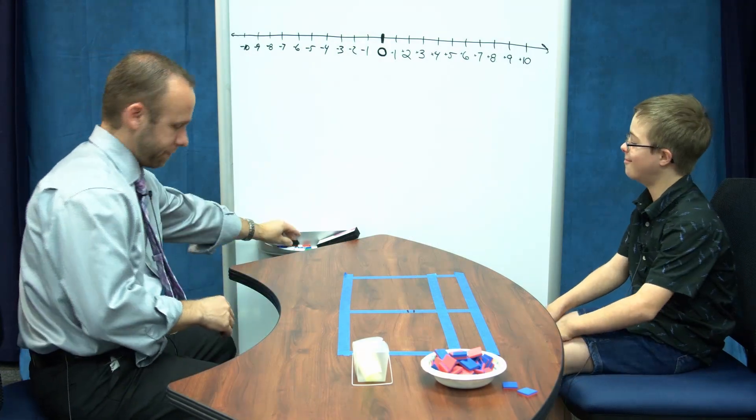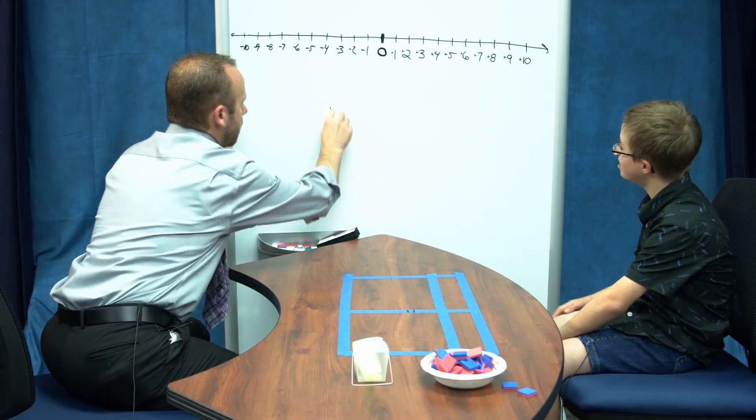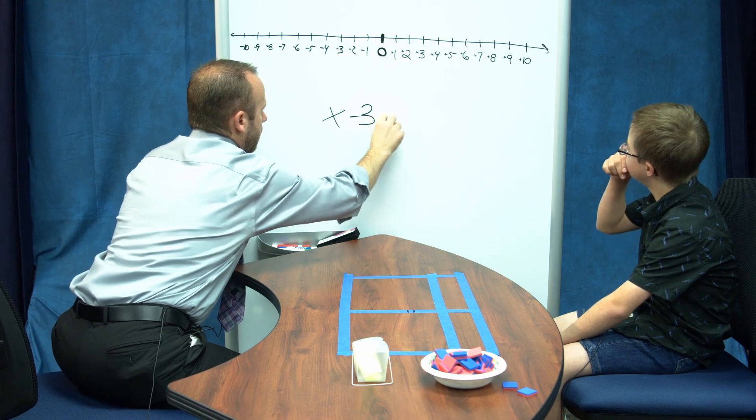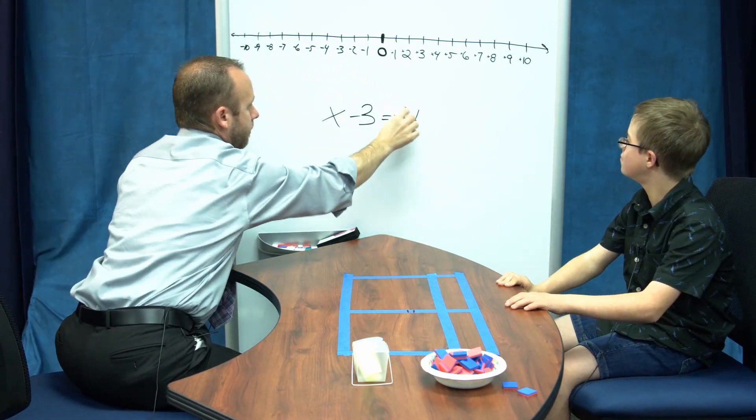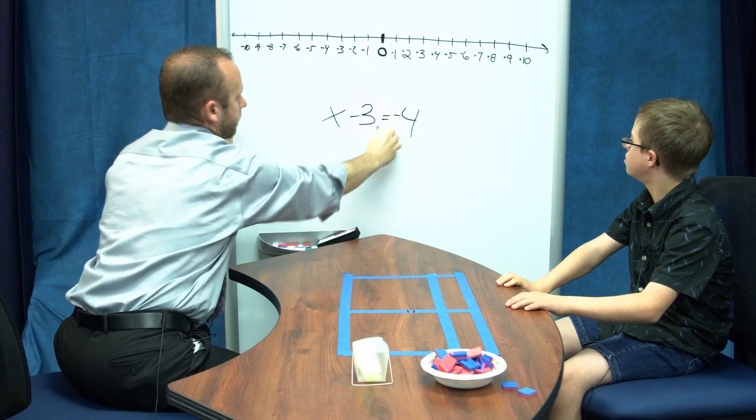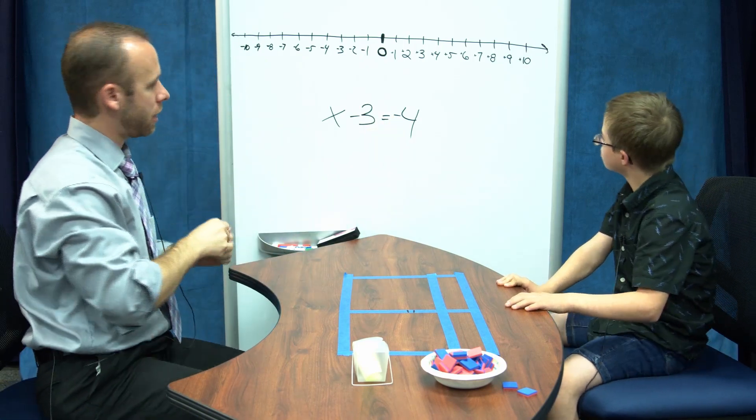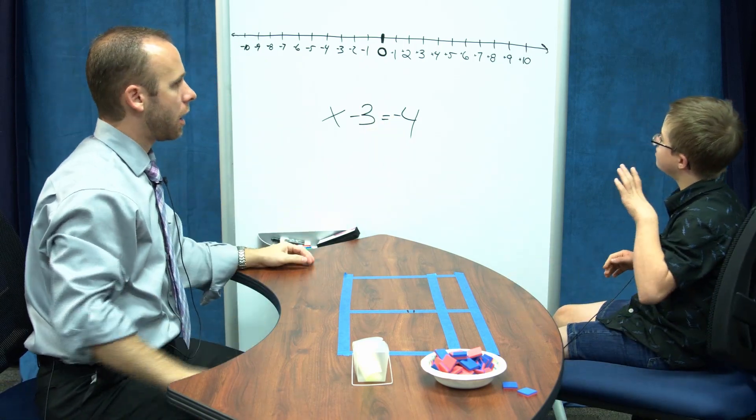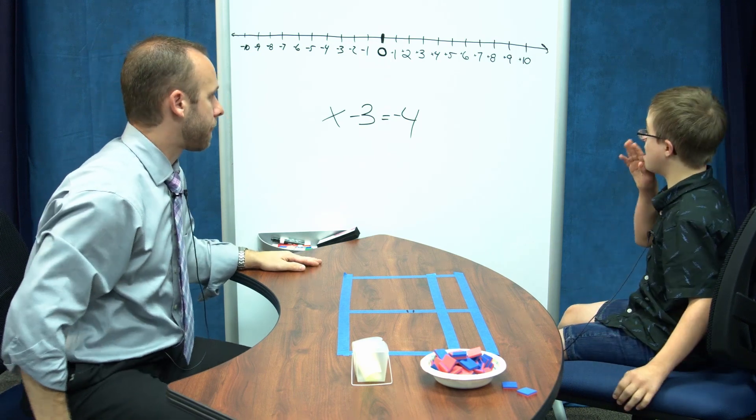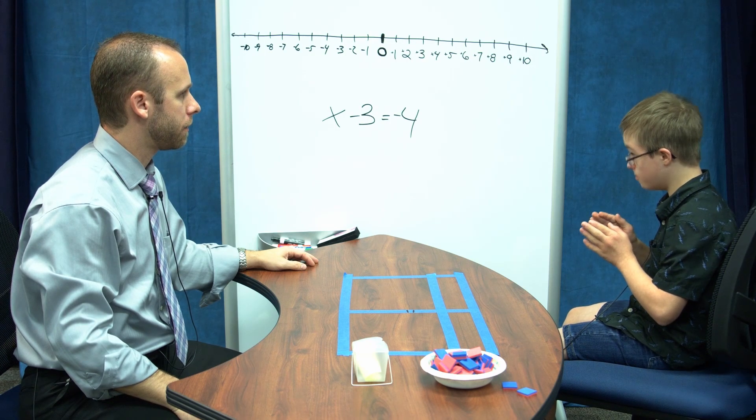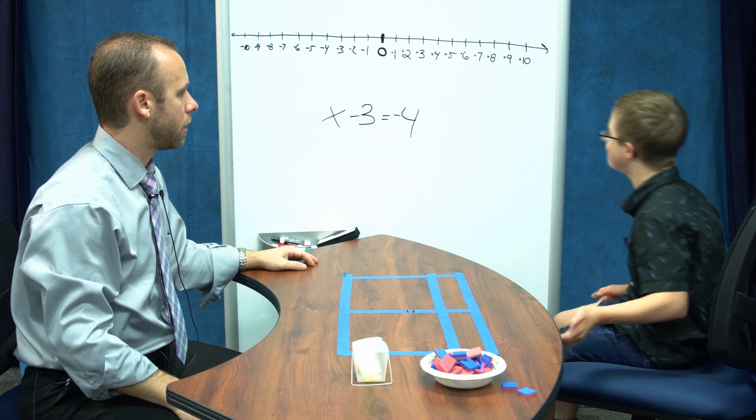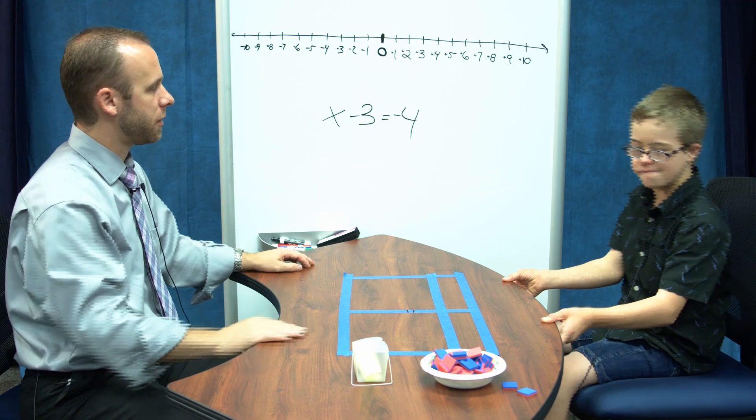Here's our problem. Let's start with x and negative 3 and put them in the middle. Let's set up the equation.